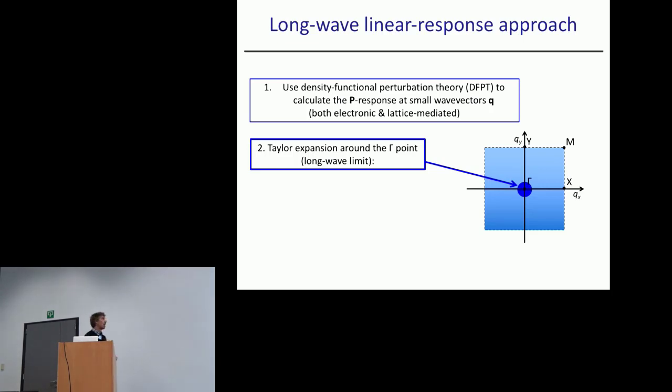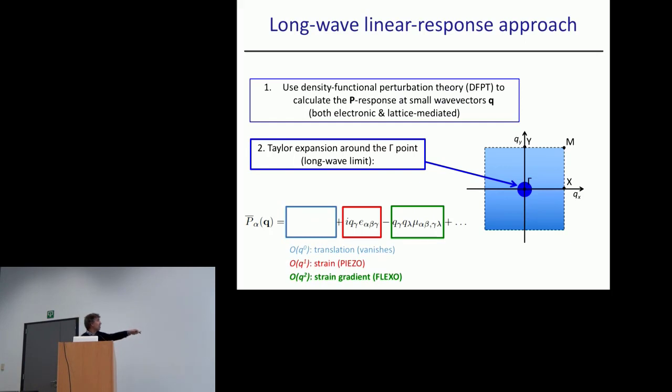The second thing we want to do is take a very small Q and take a Taylor expansion around the gamma point in the Brillouin zone, corresponding to the long wave limit. We can write the polarization as a Taylor expansion in Q where at zero order in Q we have the sum of the Born effective charges which vanishes. At first order in Q we have the piezoelectric tensor, and at second order in Q we have the flexoelectric tensor that we are looking for.